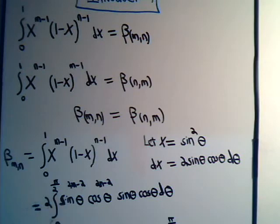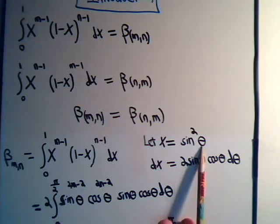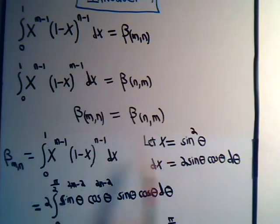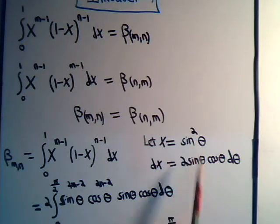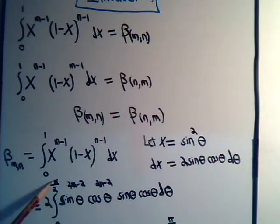So we go back to our integral here. If x is 0, then theta has to be 0. If x is 1, then theta has to be π over 2, because the sine of π over 2 is 1, 1 squared is 1. So our new limits are going from 0 to π over 2.